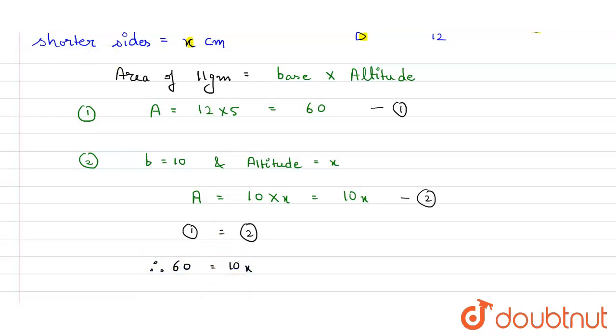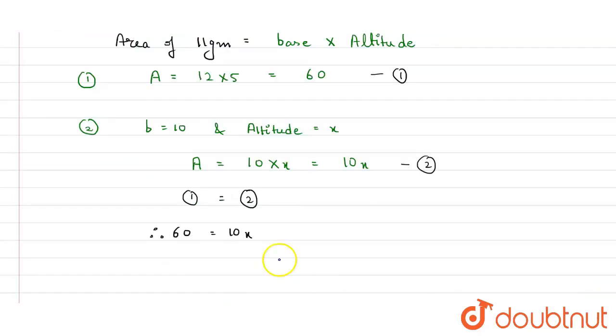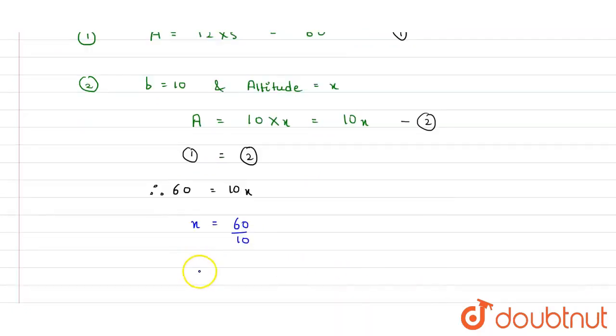Therefore 60 will be equal to 10x. So from here I can conclude that value of my x will be equal to 60 upon 10. Or I can say value of my x is equal to 6 centimeters.